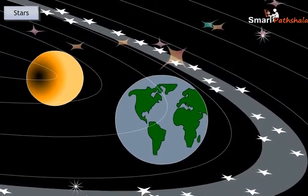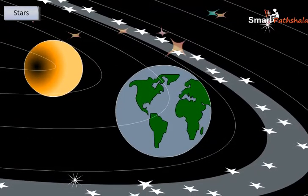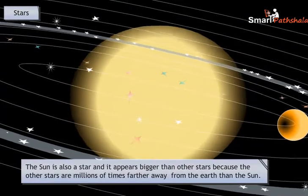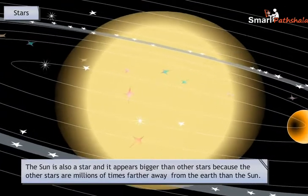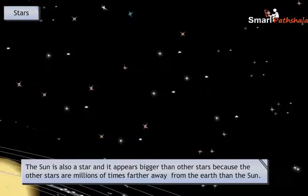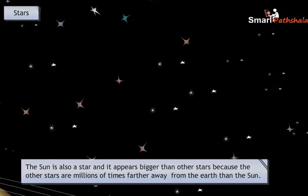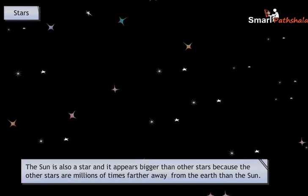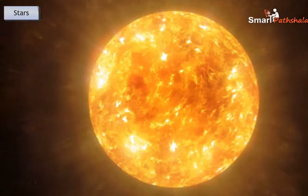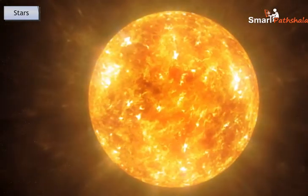These objects which do not twinkle are called planets. The Sun is also a star, and it appears bigger than other stars because the other stars are millions of times further away from the Earth than the Sun. Therefore, the stars appear to us like points, whereas the Sun appears in the size of a volleyball or a football.